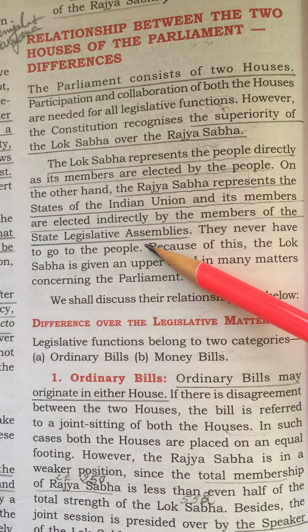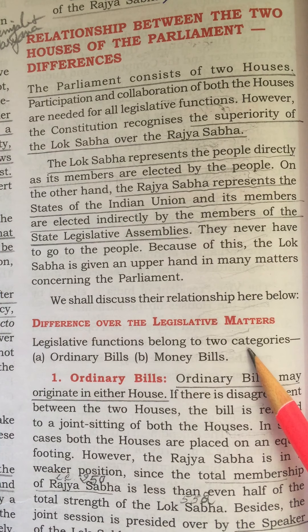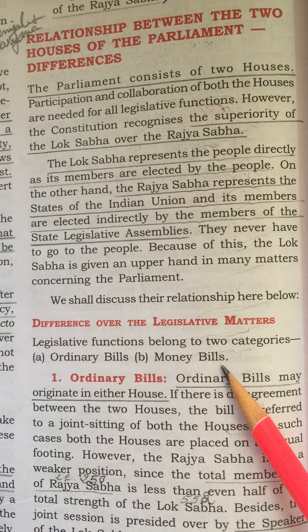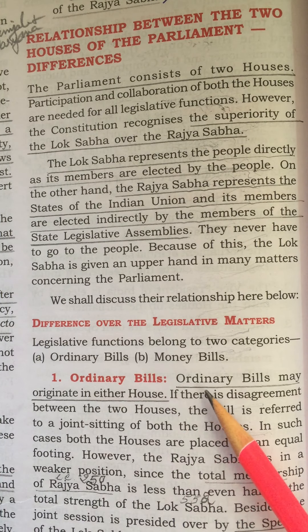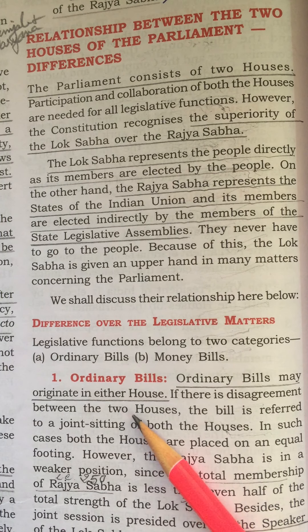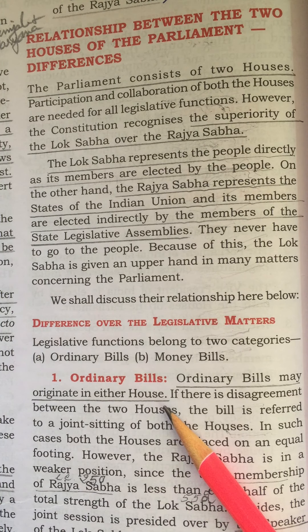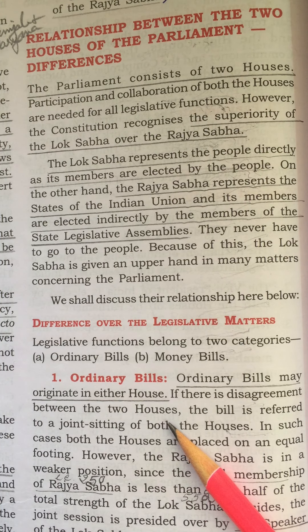Now we shall discuss the relationship. First, over legislative matters. Legislative functions belong to two categories: ordinary bills and money bills. Ordinary bills may originate in either house. In case there is disagreement between the two houses, the bill is referred to a joint sitting of both houses. In such cases, both houses are placed on an equal footing.